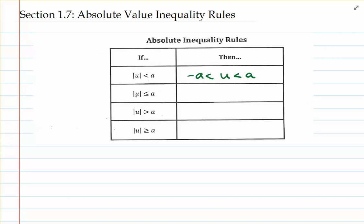The absolute value inequality in row two is done in a very similar fashion — it's going to split up into an AND compound inequality as well. We'll include the bars underneath each of the inequality symbols: negative a is less than or equal to u, which is also less than or equal to a.